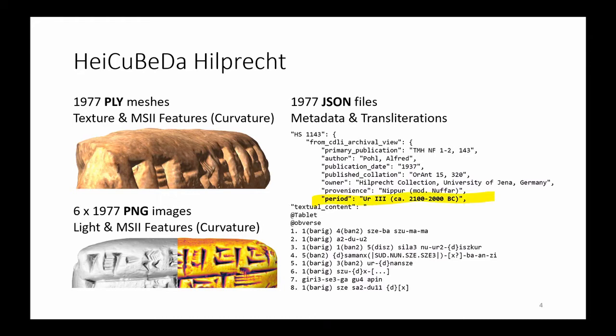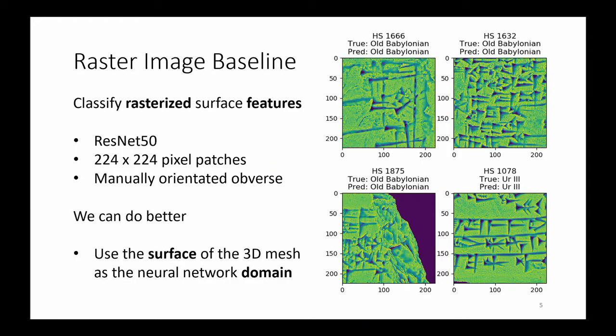In this work we focus on predicting the period of origin of a cuneiform tablet using only the acquired 3D mesh, its geometrical shape. We first investigate a raster image baseline. HiQbeta contains characterized views from 6 sides of its cuneiform tablets. These are colored by a pre-computed MSII surface curvature. We cut rectangular patches from the tablet projections and train a ResNet-50 neural network.